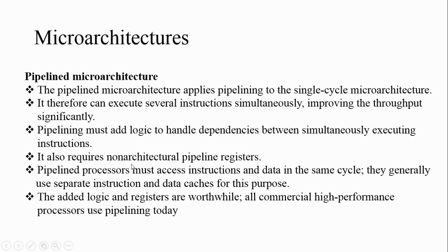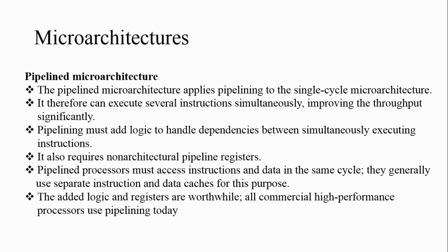Pipelined architecture also requires additional non-architectural pipeline registers, since pipeline registers are not part of the architectural state elements. Pipeline processors must access instructions and data in the same cycle, so separate instruction and data caches are required. By adding this additional control logic and pipeline registers, the overall performance of the processor is significantly increased. These are the three different types of microarchitectures available for ARM processor design.